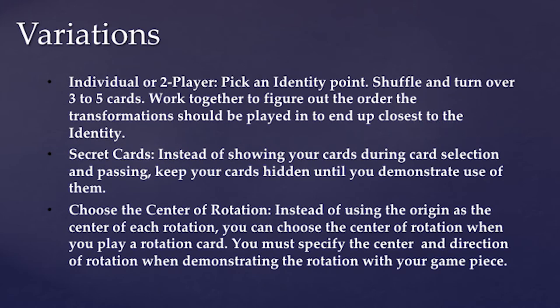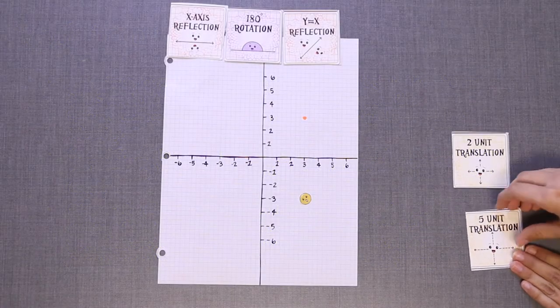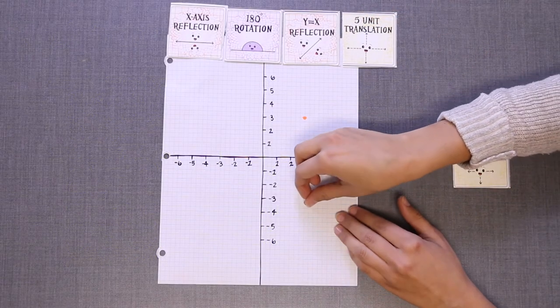A variation for beginners allows players to work together using three to five identity cards. Together, players decide which order the transformations should be played to move the game piece as close as possible to the original point.